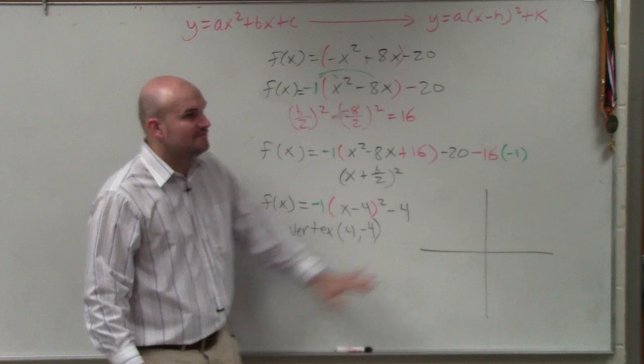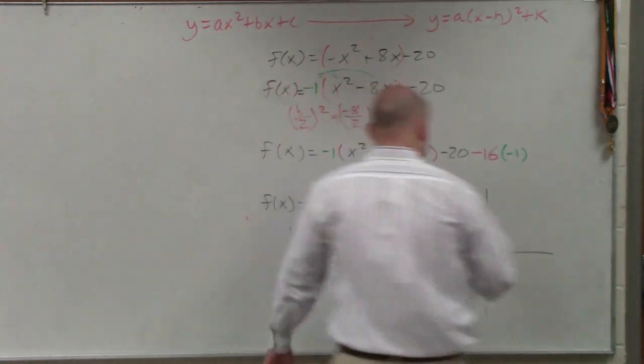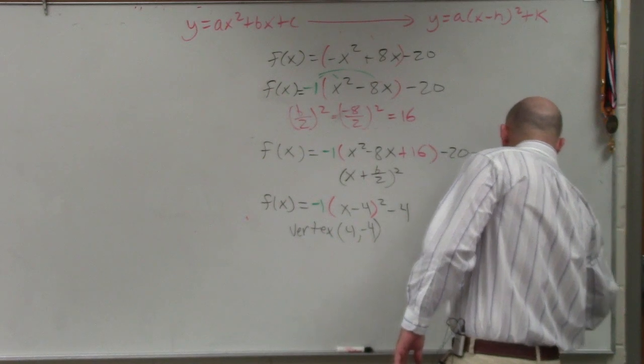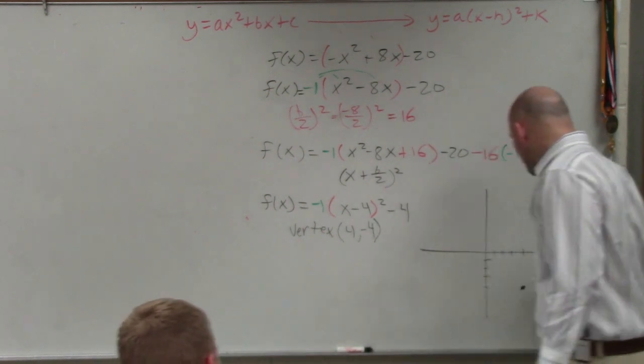Opposite of minus 4 is going to be 4 comma negative 4. So instead of my parent graph having a vertex at 0, 0, I'm now going to go to 1, 2, 3, 4. 1, 2, 3, 4. That is my new vertex.